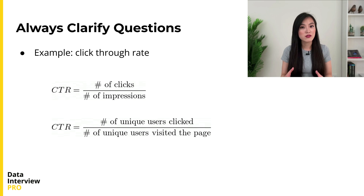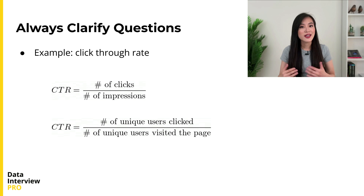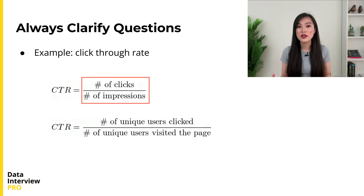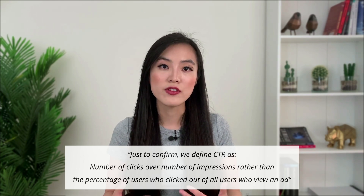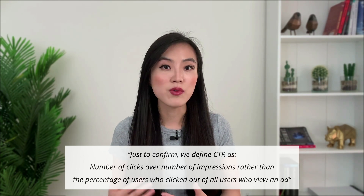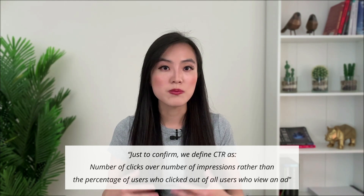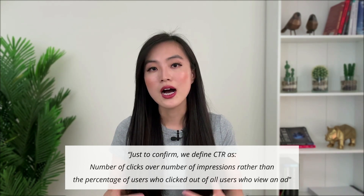One commonly used metric, click rate, is used to measure the performance of advertisements. Normally, it is calculated by the total number of clicks over the total number of impressions. However, in reality, sometimes it may refer to the percentage of users who click out of all the users who view an advertisement. It's worth clarifying which definition the interviewer would like to use. You could simply say: 'Just to confirm, when we say click rate, we define it as the number of clicks over the number of impressions, rather than the percentage of users who click out of all users who view that ad.'